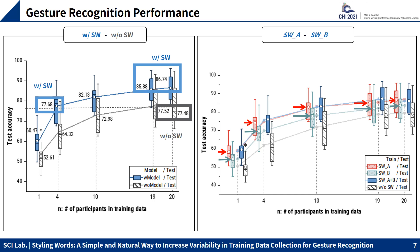The right graph shows recognition performance by styling word type. Type A consists of more intuitive words such as 'fast' and 'huge,' while type B consists of abstract words such as 'elegantly' and 'roughly.' Before the experiment, we expected abstract words would affect recognition accuracy more than intuitive ones. But as shown in the graph, intuitive words have higher recognition performance compared to abstract words.